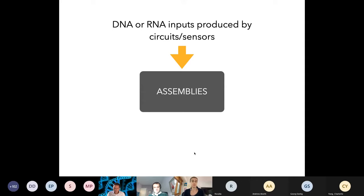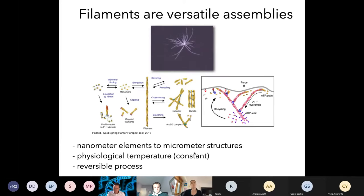The type of assembly we use are filaments. We focus on filaments because they are versatile components in biology. You've probably heard of microtubules and actin filaments, and that's what cells use for motility and for transport. What microtubules and actin filaments do is basically they recycle monomers by changing their energetic state. Those monomers are used for both nucleating and elongating polymers. Then there's proteins that coordinate that assembly into bundles, networks, and branched filaments. So you have a few nanometer elements that give you micrometer structures. All their work happens at physiological temperature, and usually all these processes are reversible.